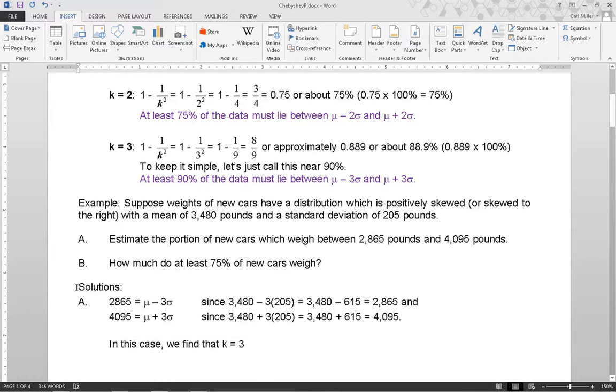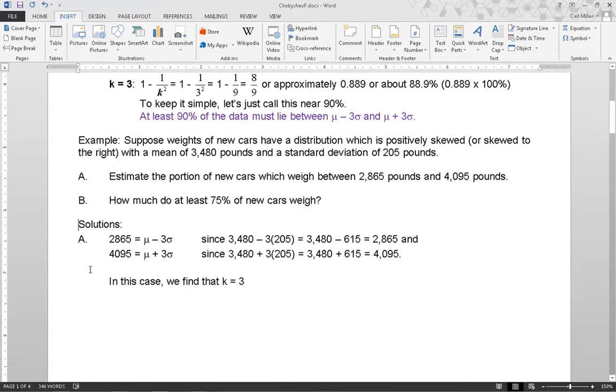Solutions. A. 2,865 equals mu minus 3 sigma since 3,480 pounds minus 3 times 205 equals 3,480 minus 615 which equals 2,865 and 4,095 equals mu plus 3 sigma since 3,480 plus 3 times 205 equals 3,480 plus 615 which equals 4,095. In this case, we find that k equals 3.